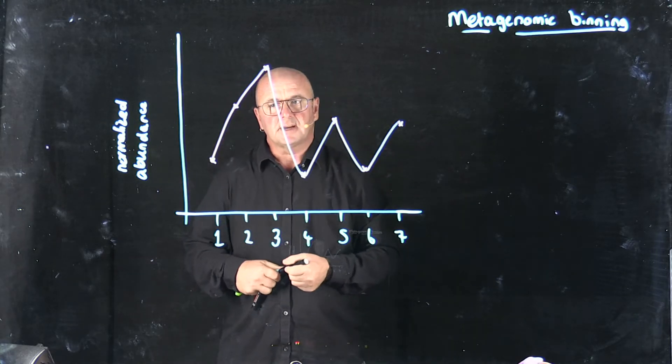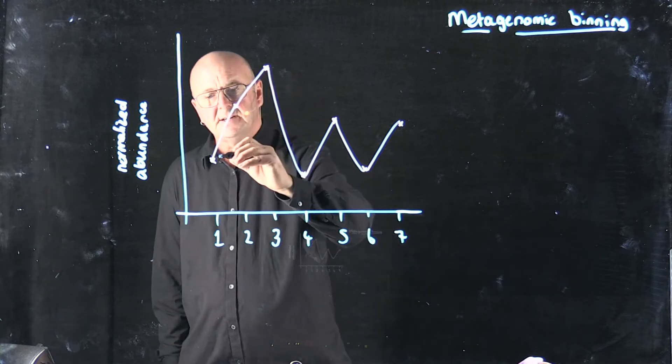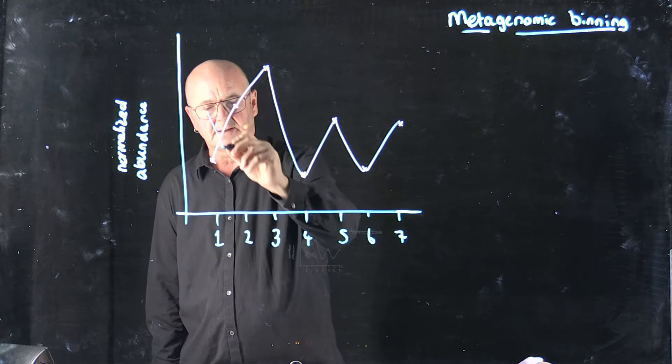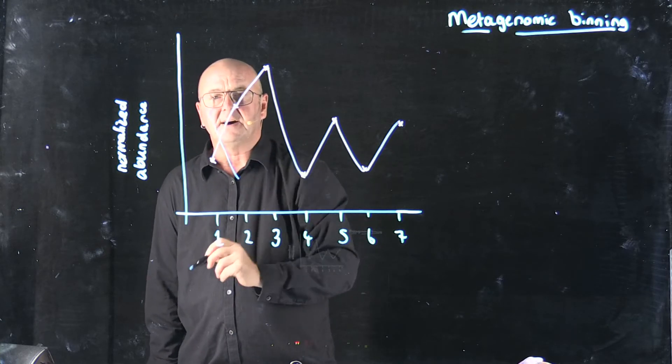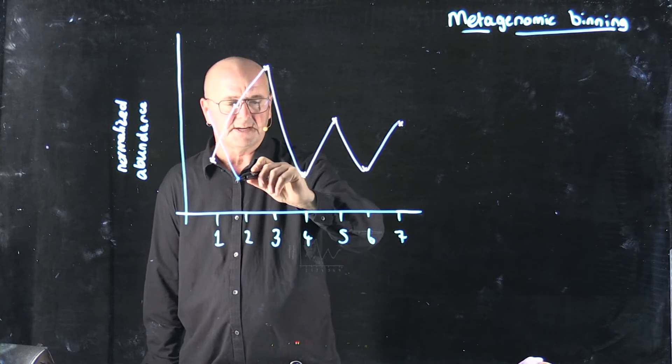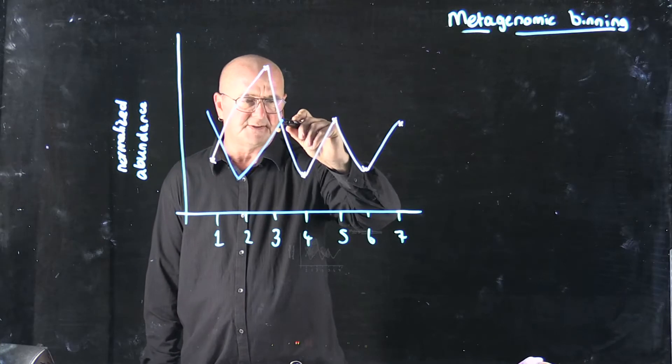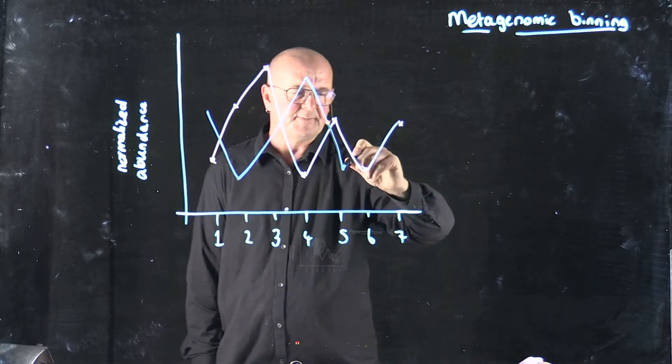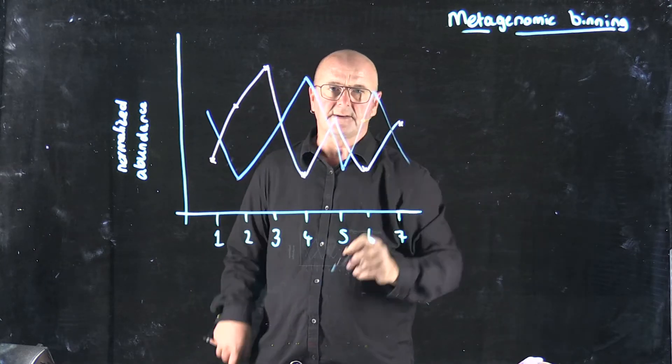That's for one contig, but we repeat that process for all of the contigs. And so maybe there's a contig that starts off high on day one, and then is less on day two, is more on day three, even more on day four, goes down on day five, up on day six, and down on day seven.